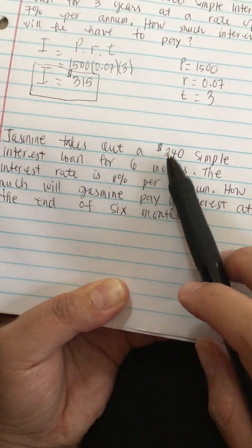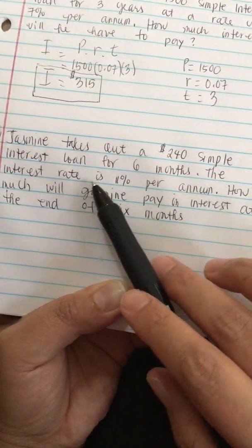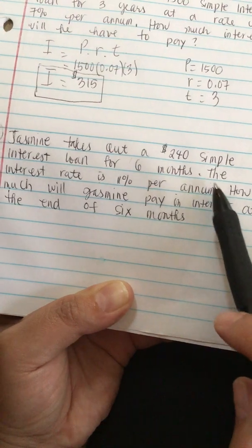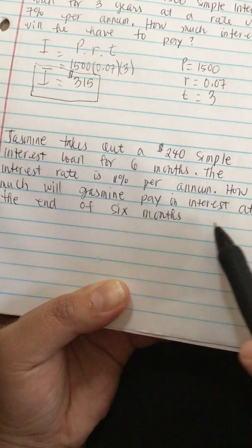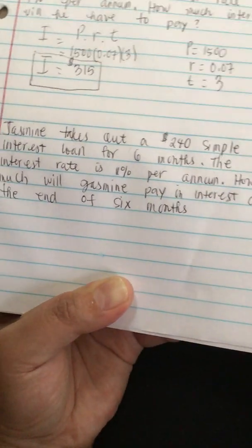Jasmine takes out a $240 simple interest loan for 6 months and the interest rate is 11% per annum. How much will Jasmine pay in interest at the end of 6 months?